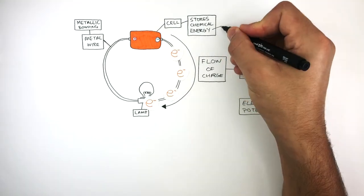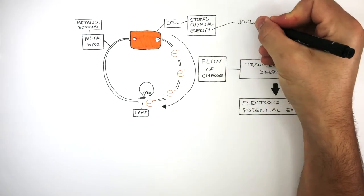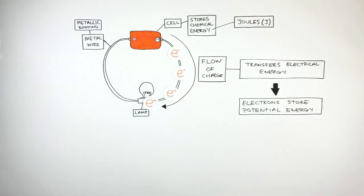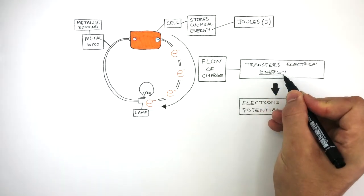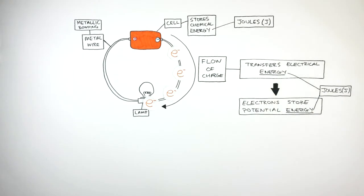The unit for the chemical energy in the cell is joules, where the symbol is J. And the unit for electrical energy is also joules, again the symbol is J. No matter what store of energy it is, the unit is always joules.